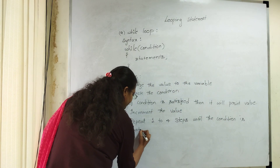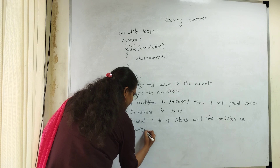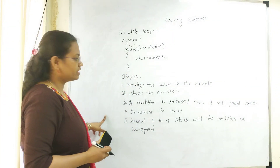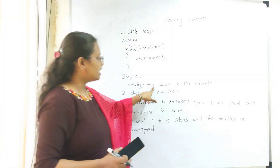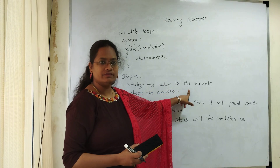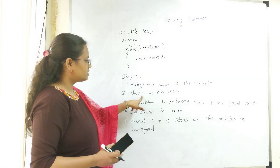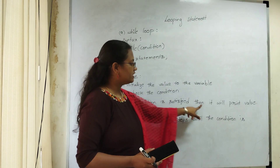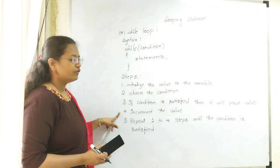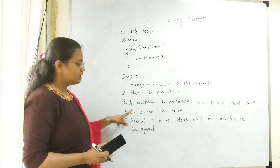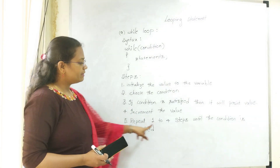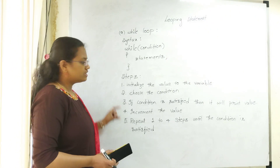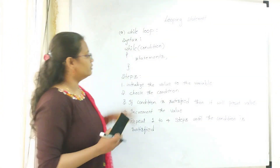So to implement while loop, the steps are: first, initialize the value to the variable; second, check the condition; third, if the condition is satisfied, print the value; fourth, increment the value; and fifth, repeat steps one to four until the condition is satisfied. These are the steps to implement your while loop.